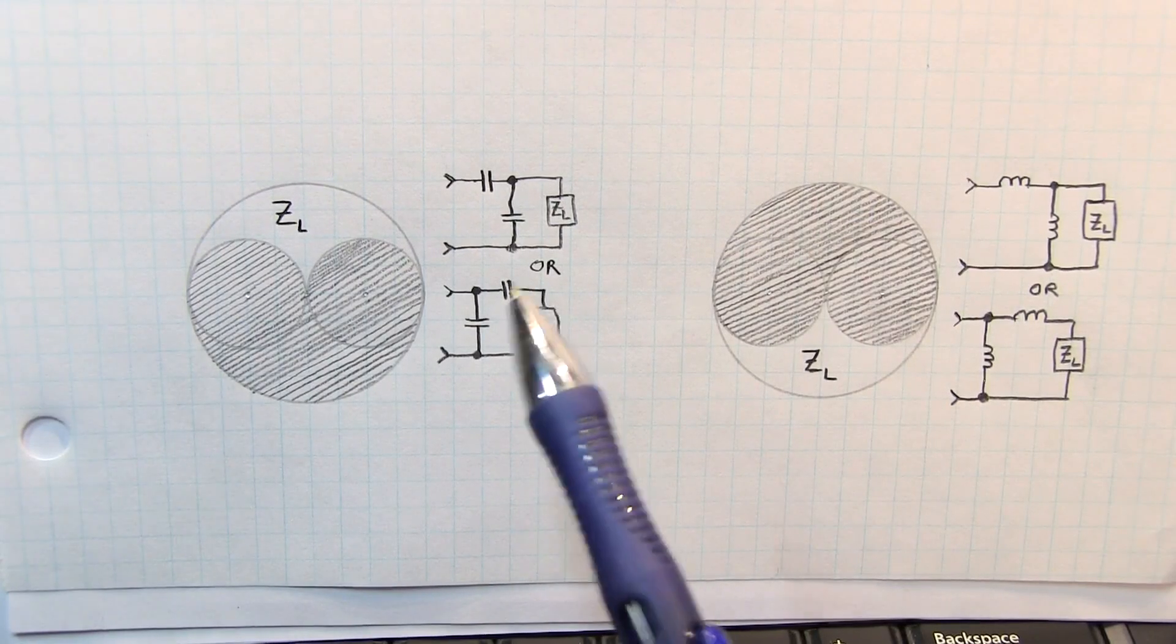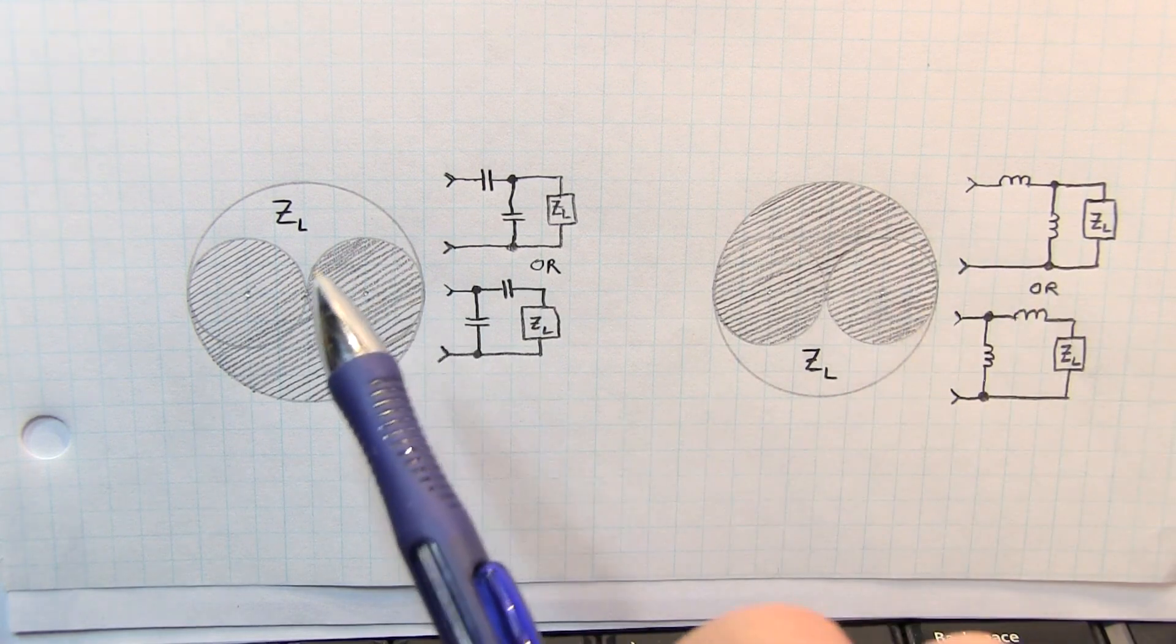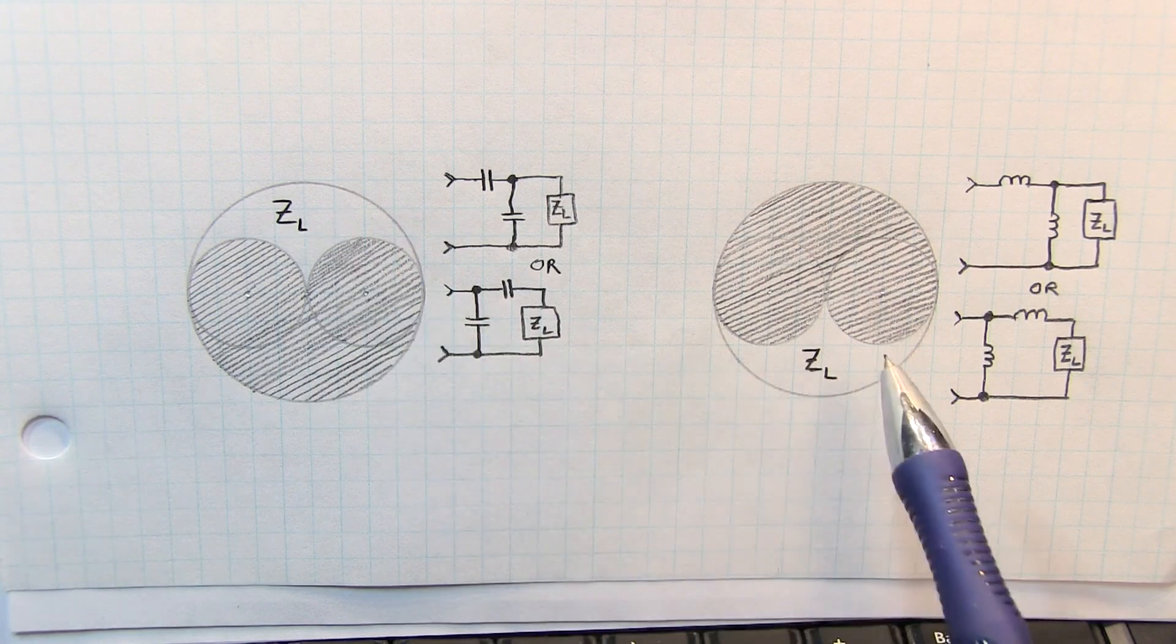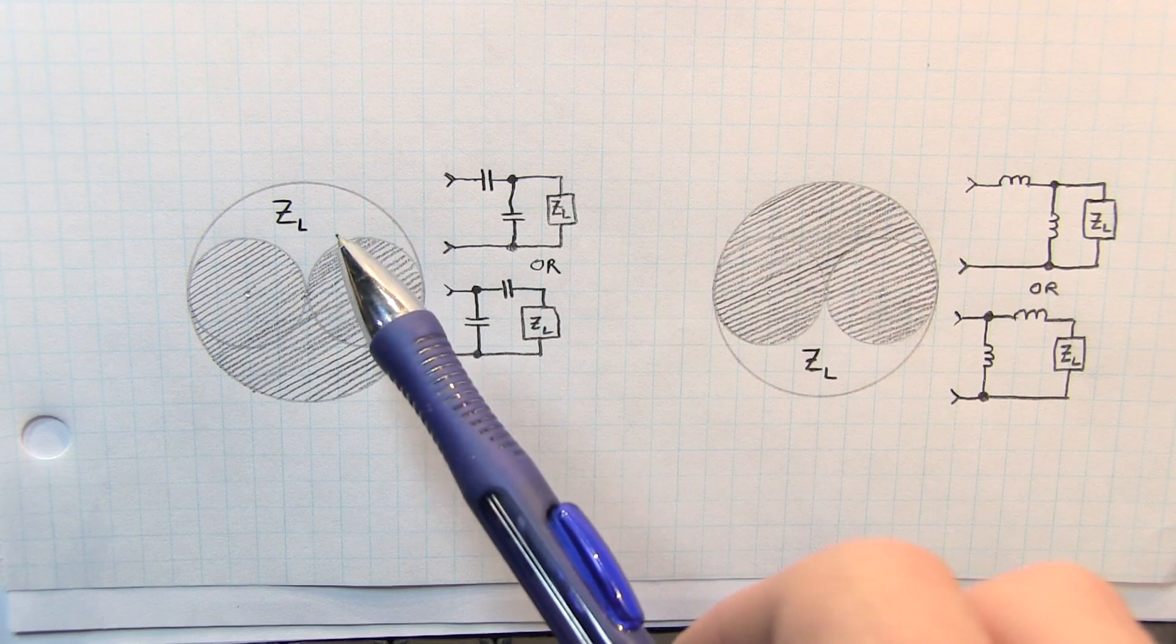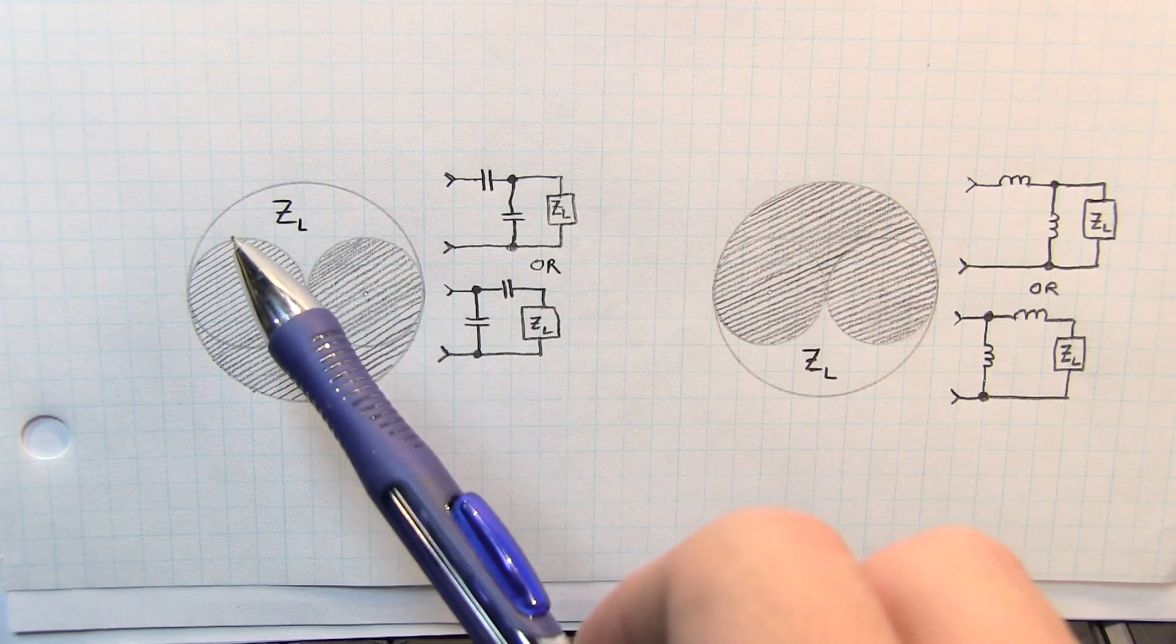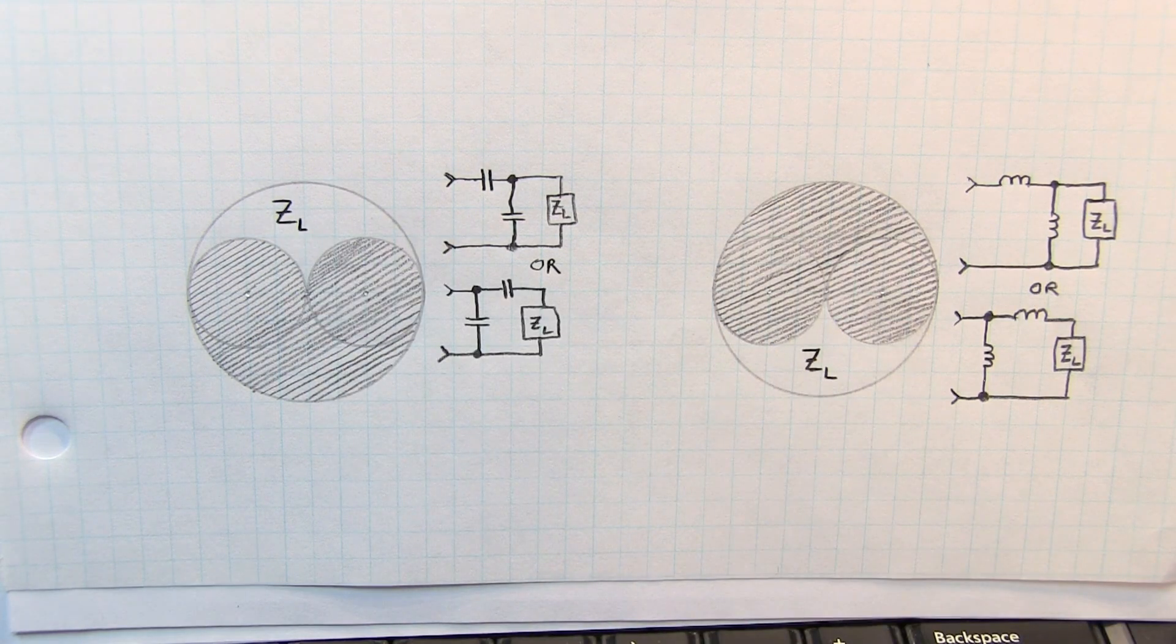And of course, let's not forget that the L network can either be all capacitors or all inductors. And I've got similar diagrams here to show you what impedances can be matched using these configurations. They're not as commonly used because the range of load impedances that can be matched is smaller, given the smaller area here contained in the unshaded area of these Smith charts.